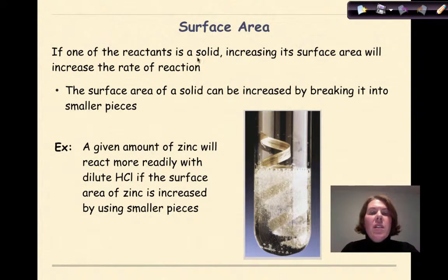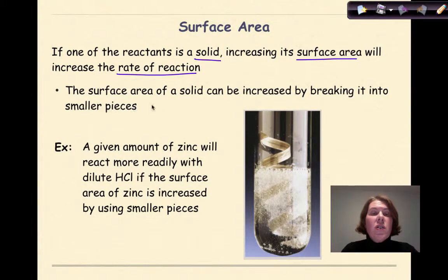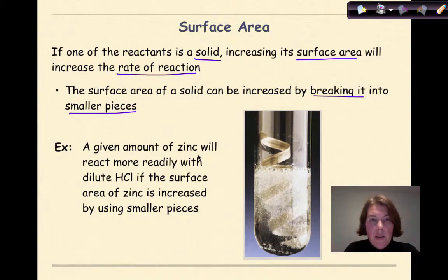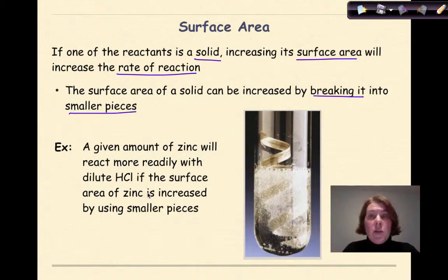If one of the reactants is a solid, increasing its surface area will increase the rate of reaction. The surface area of a solid can be increased by breaking it into smaller pieces. For example, a given amount of zinc will react more readily with dilute hydrochloric acid if the surface area of the zinc is increased by using smaller pieces.